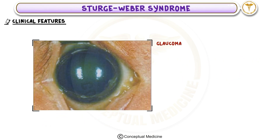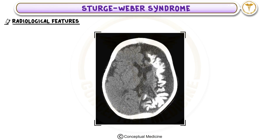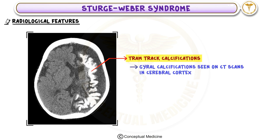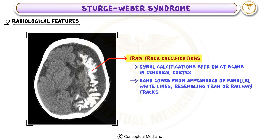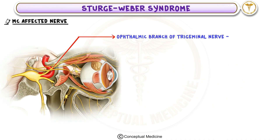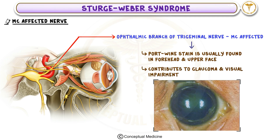Clinical Feature 3: Glaucoma, where there is increased pressure inside the eye, can lead to vision loss if not managed properly. Radiological Feature — Tram-track Calcifications: These are gyral calcifications seen on CT scans, particularly in the cerebral cortex. The name 'tram-track' comes from the appearance of parallel white lines resembling tram or railway tracks, occurring due to cortical atrophy from poor blood supply. The ophthalmic branch of the trigeminal nerve is most commonly affected in Sturge-Weber syndrome, explaining the port-wine stain on the forehead and upper face, and contributing to glaucoma and visual impairment.